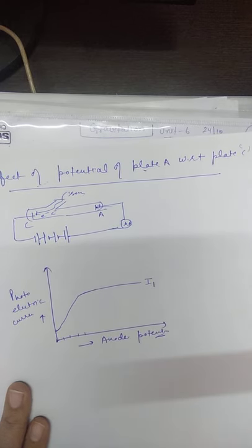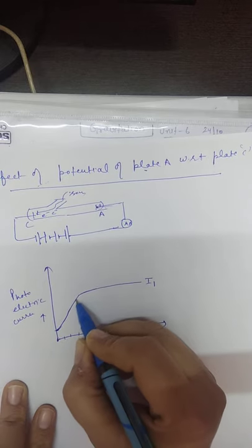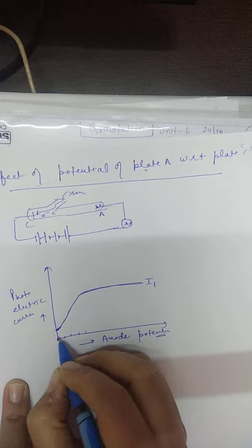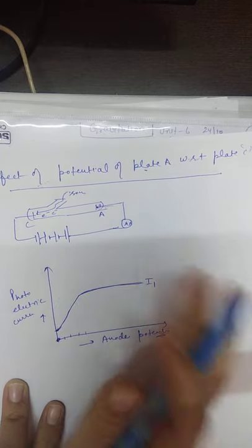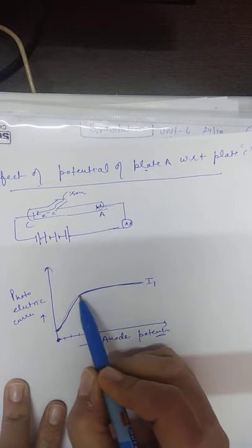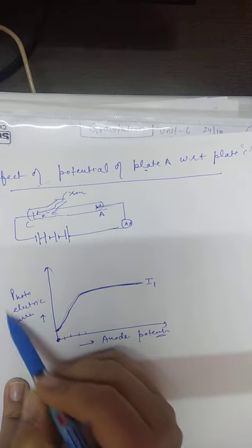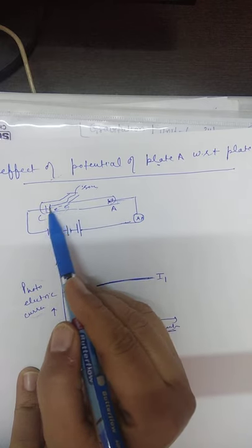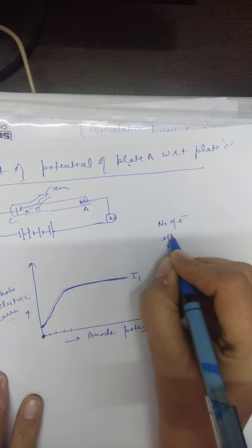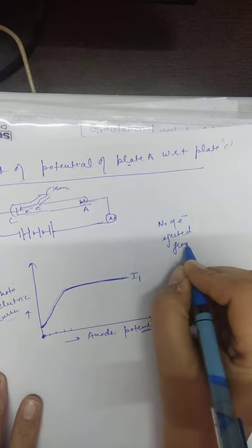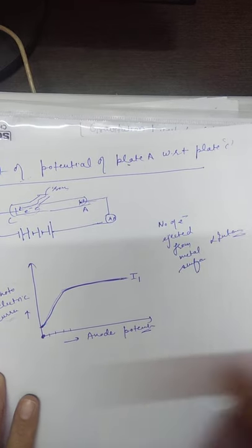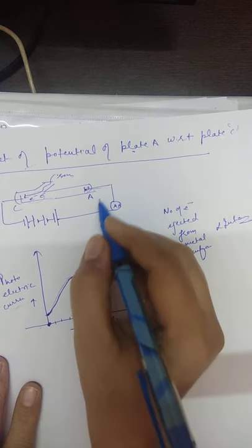For a given intensity, the current initially increases slightly and then becomes constant — this is the saturation current. This is because the photoelectric current consists of a number of electrons, and that number of electrons is decided by the intensity of light. The number of electrons ejected from the metal surface is directly proportional to the intensity of light.